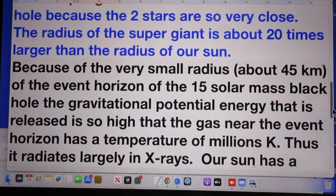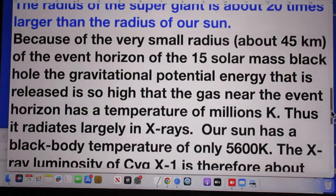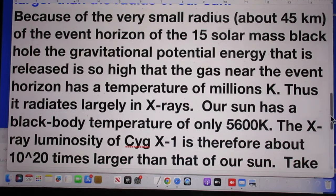The radius of the supergiant is about 20 times larger than the radius of our sun. Because of the very small radius of about 45 kilometers of the event horizon of the 15 solar mass black hole, the gravitational potential energy that is released is so high that the gas near the event horizon has a temperature of millions of degrees Kelvin.